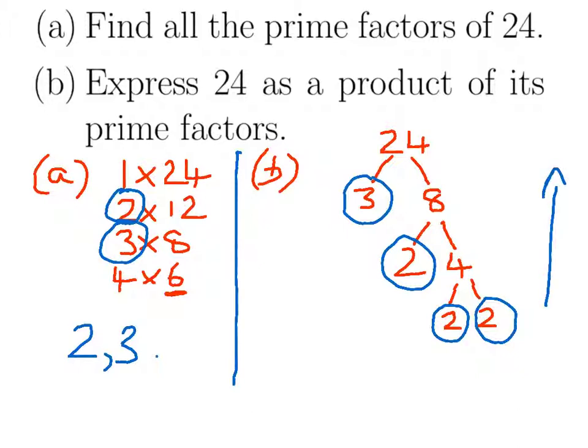If you think about it, the 2 times 2 at the bottom gives you 4, then the 2 times 4 gives you 8, and then the 3 times 8 gives you 24.